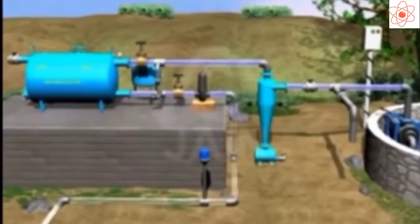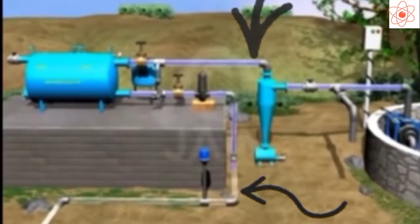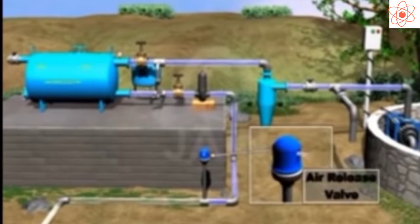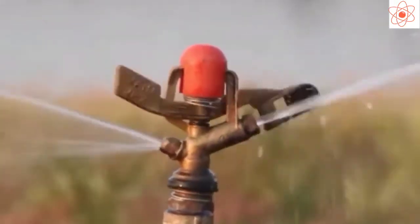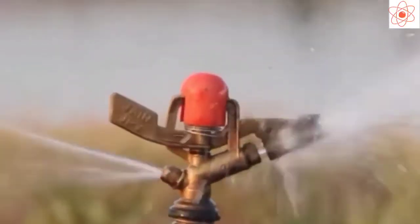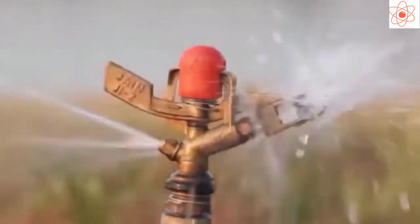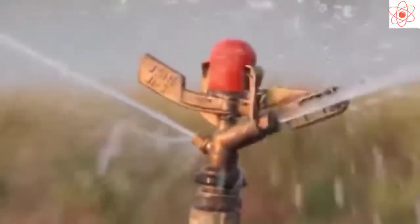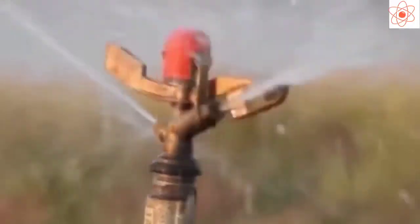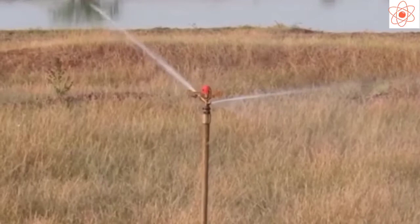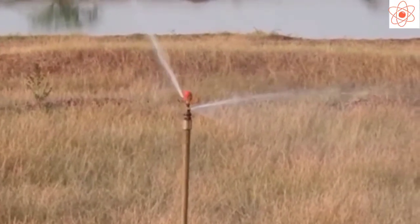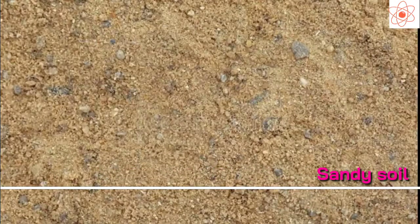When water from a tube well is allowed to flow through the main pipeline under pressure with the help of a pump, it escapes from the rotating nozzles. This water gets sprinkled on the crop plants as if it is raining. The sprinkler system of irrigation is more useful for uneven land where sufficient water is not available. It is also very useful for sandy soil.